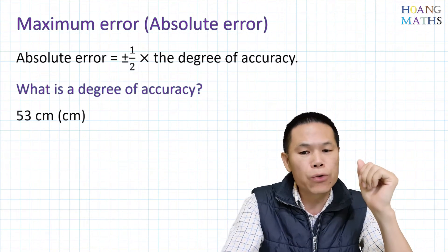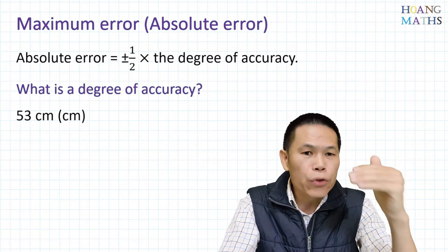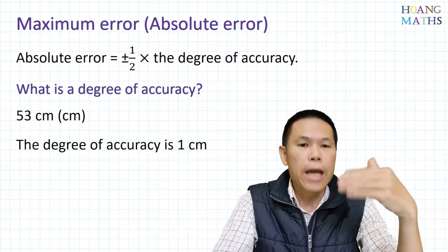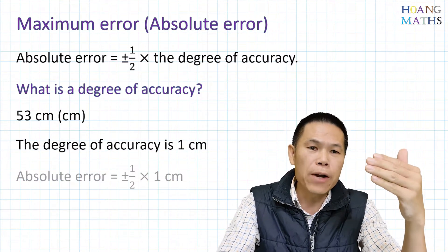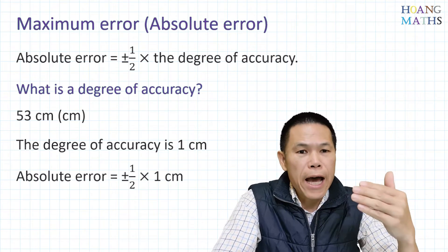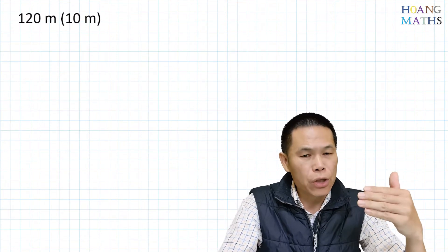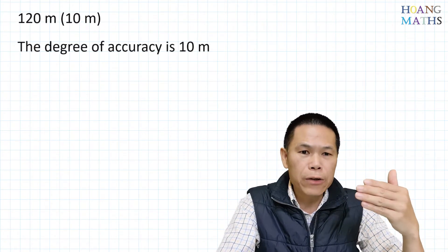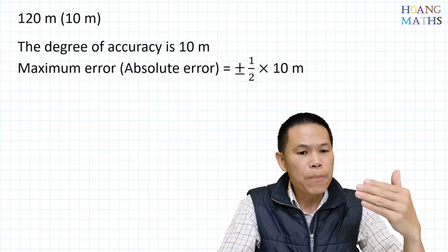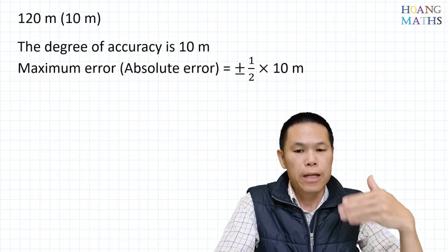What is the degree of accuracy? For example, if we have a measurement of 53 centimeters and it is correct to centimeters, then the degree of accuracy is 1 centimeter. The absolute error is half of 1 centimeter. Another example: if a measurement is correct to 10 meters, then the degree of accuracy is 10 meters, and the absolute error is half of 10 meters.